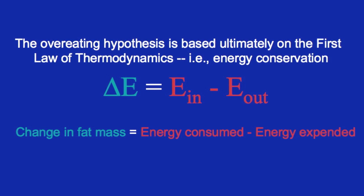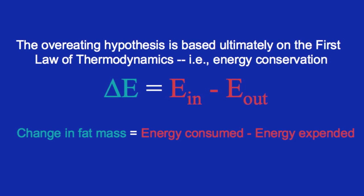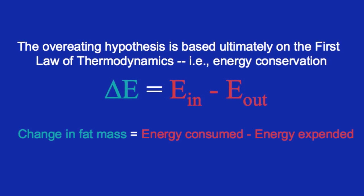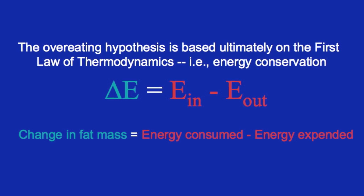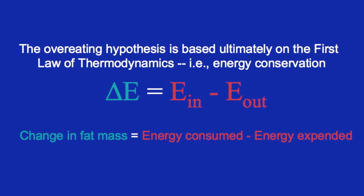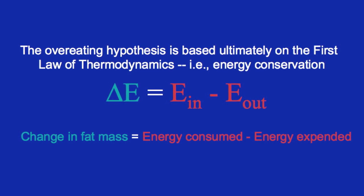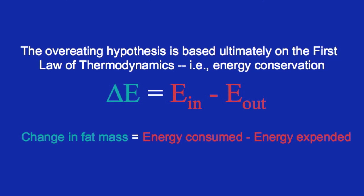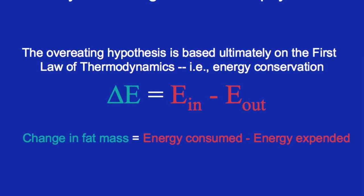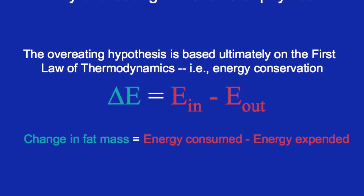Atkins was always attacked for trying to argue that thermodynamics somehow doesn't hold for obesity. What the first law of thermodynamics — the energy conservation law — says is that the change of energy (delta E on the left) is basically equal to the energy we consume (E-in) minus the energy we expend. This law says if a system gets more or less massive, it has to take in either more energy than it expends or less, because you can't create energy from whole cloth.